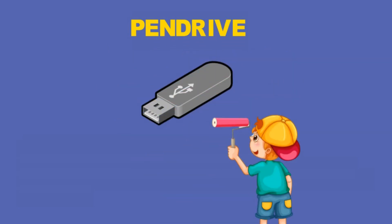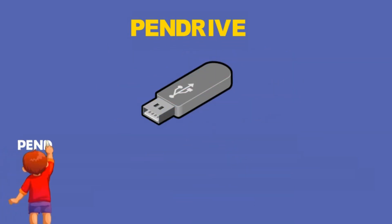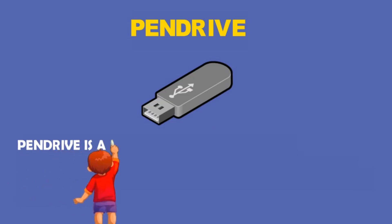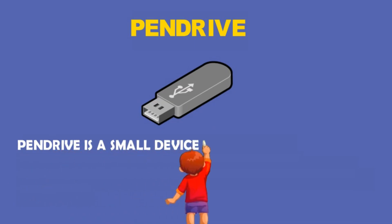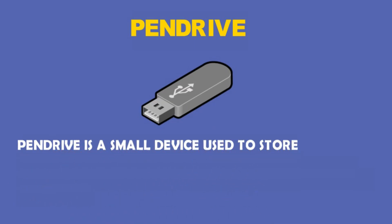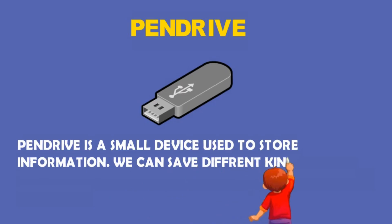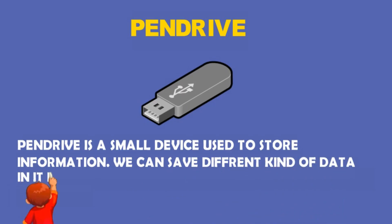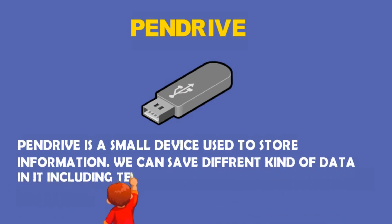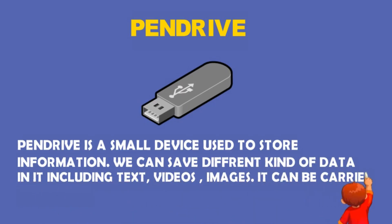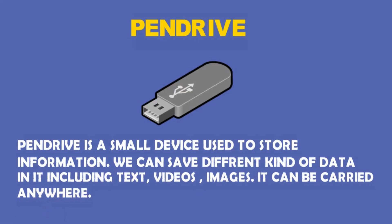Pen drive. A pen drive is a small device used to store information. We can save different kinds of data including texts, videos, and images. It can be carried anywhere.